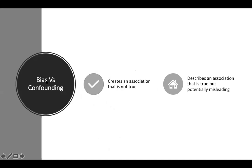When you compare the two, you discover that biases create an association that is not true. But confounding describes an association that is true, but potentially misleading.